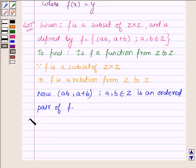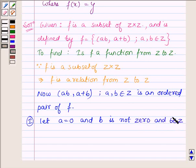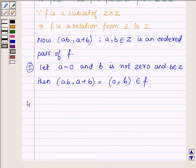First, let a equals 0 and b is not 0 and b belongs to Z. Then the ordered pair (ab, a+b) equals (0, b) which belongs to f.